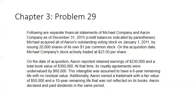Michael acquired all the outstanding voting stock on January 1st, 2011 — be careful of the dates. The acquisition was made by issuing 20,000 shares of its own $1 par value common stock. At the acquisition date, Michael's stock was trading at $23.50, so the fair value of consideration transferred is 20,000 times $23.50. Aaron reported retained earnings of $230,000 — we'll need that later for our Star C entry.